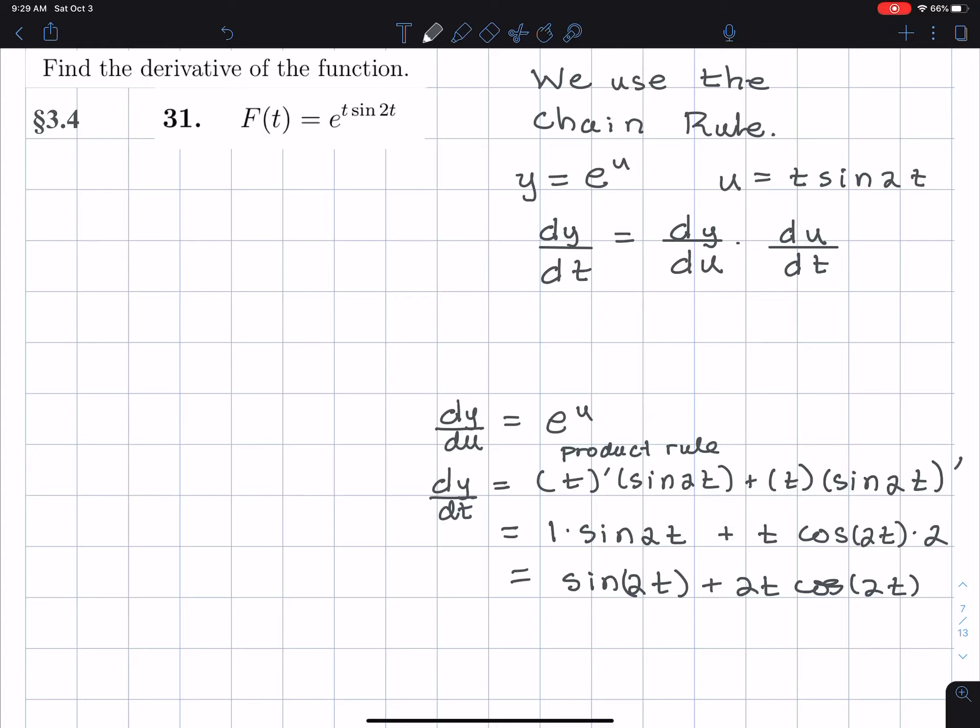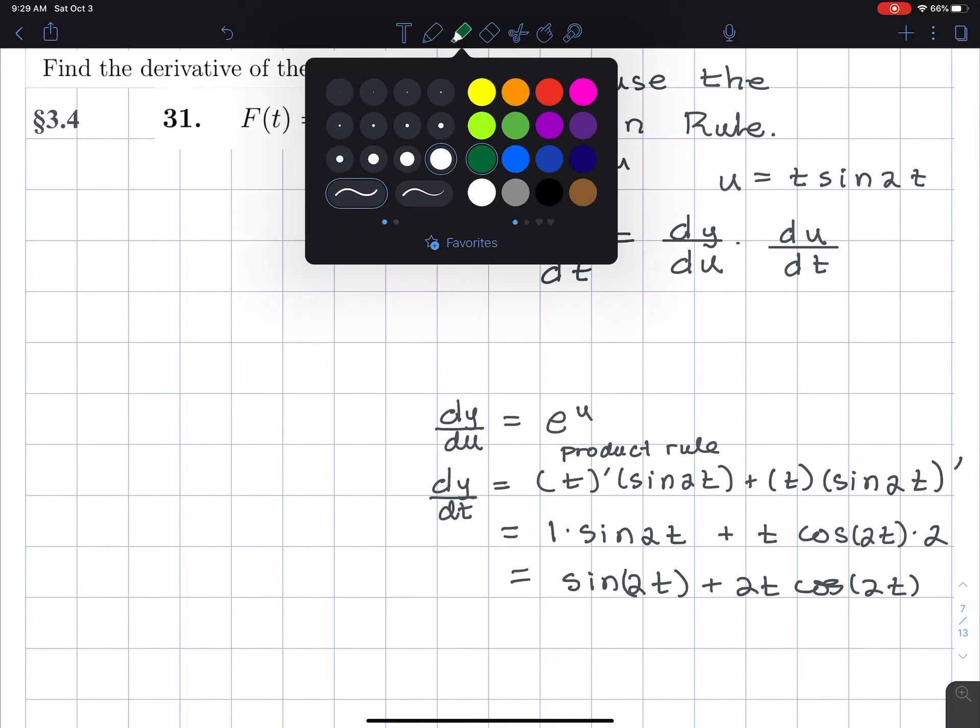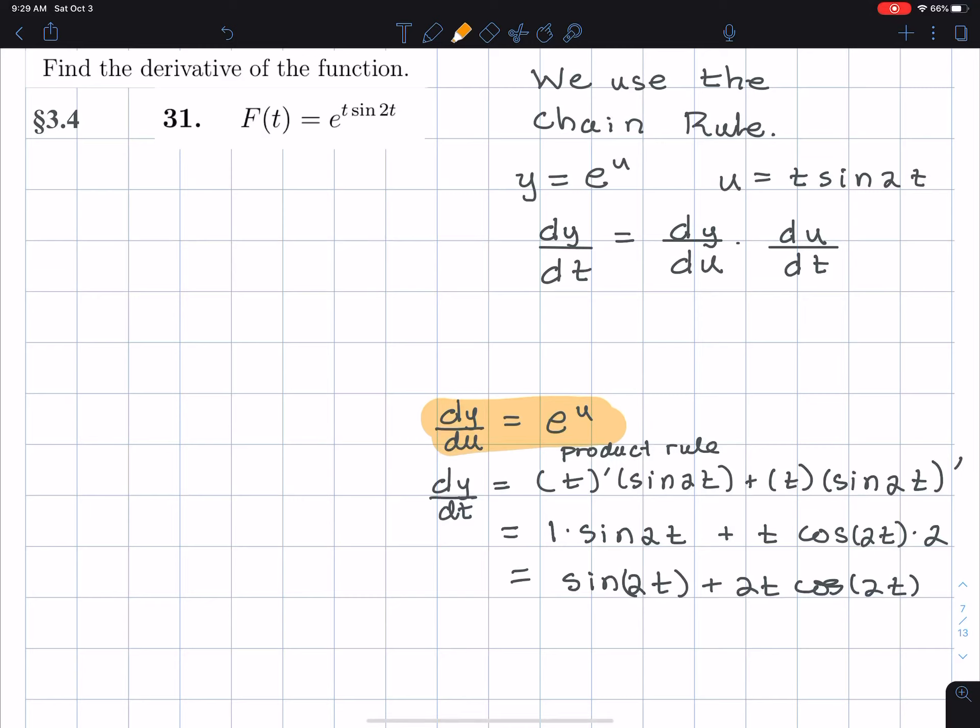And I'm going to take those two and multiply them together. I'm going to take those two derivatives and multiply them together. I have the dy du is e to the u, and I have the dy dt is this longer thing right there. So that I get dy... I have dy dt equals e to the u. Why don't I write down what e to the u is? Because u is t sine 2t. Then I multiply by sine 2t plus 2t cosine 2t.